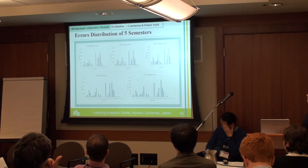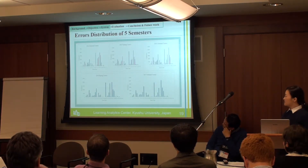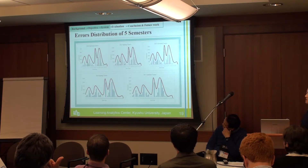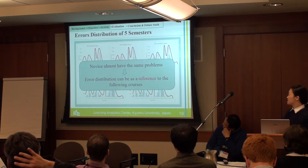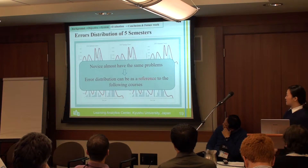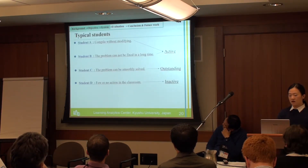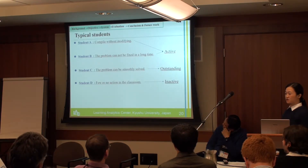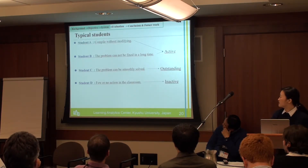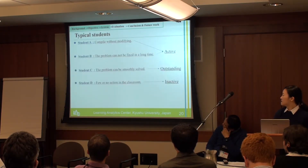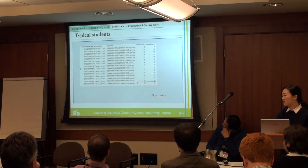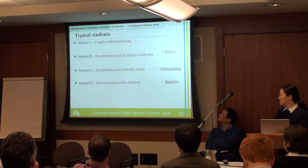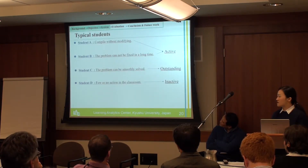This is the error distribution across five semesters. From it, we can notice that all students learning programming make almost the same errors, which indicates that the result can be a reference for following courses. We also found some typical student behaviors: some students compile without modifying their code, some students can't fix a problem for a long time — for example, one student almost spent an entire course fixing one problem — while some students solve problems smoothly and some have no real action in the classroom.